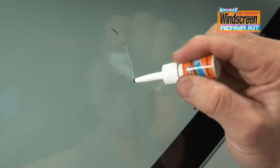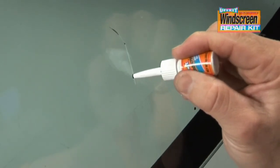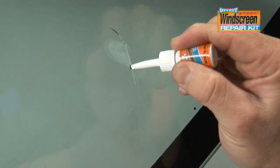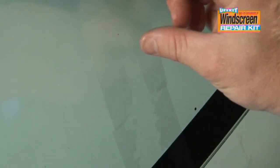Apply more resin onto the repaired crack and cover with the curing strips, overlapping them if necessary. Do not apply any pressure to the windscreen as this may force air back into the crack.